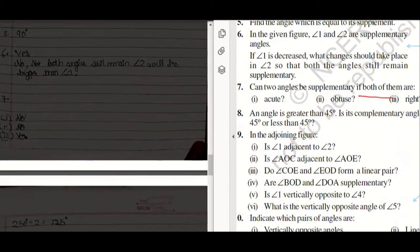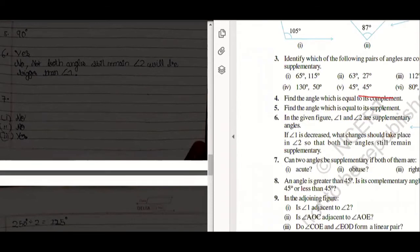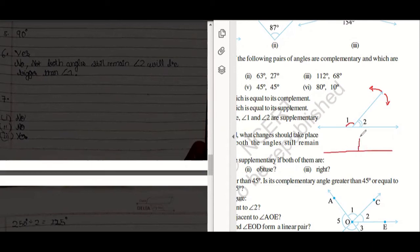Again, if angle one decreases, what will change? If angle one decreases, what will the line do — go there or go there? If angle one decreases, it will go to the left side. So, what will happen to angle two? Angle two will increase.